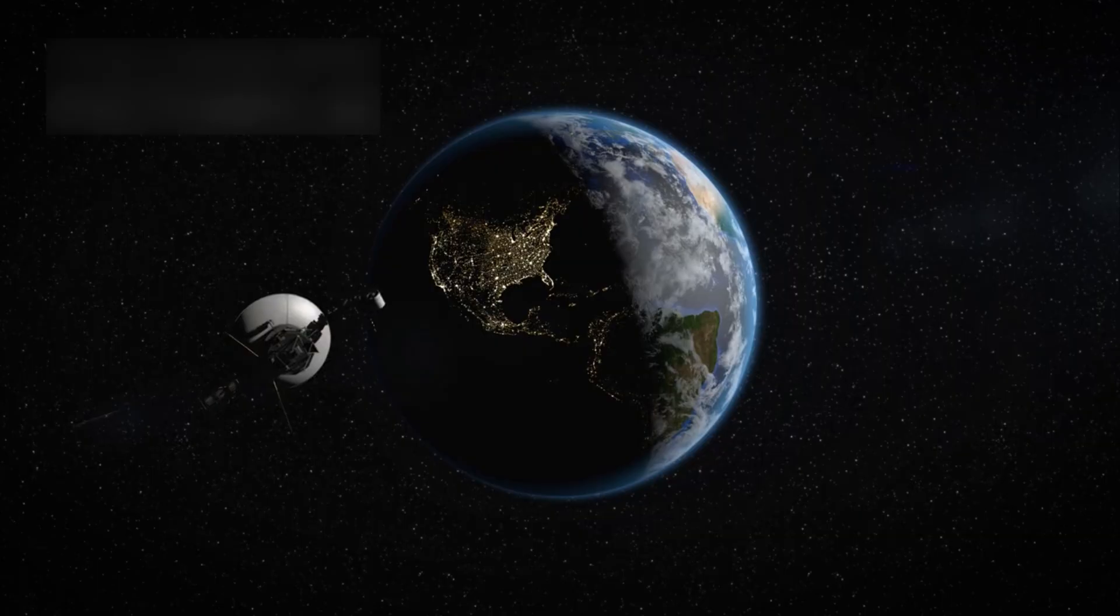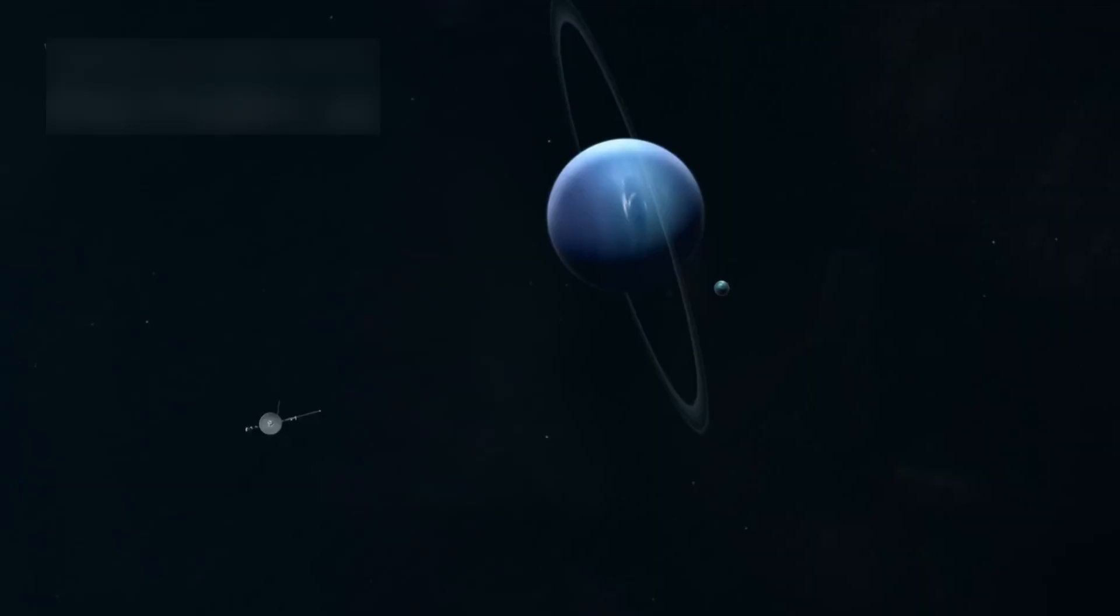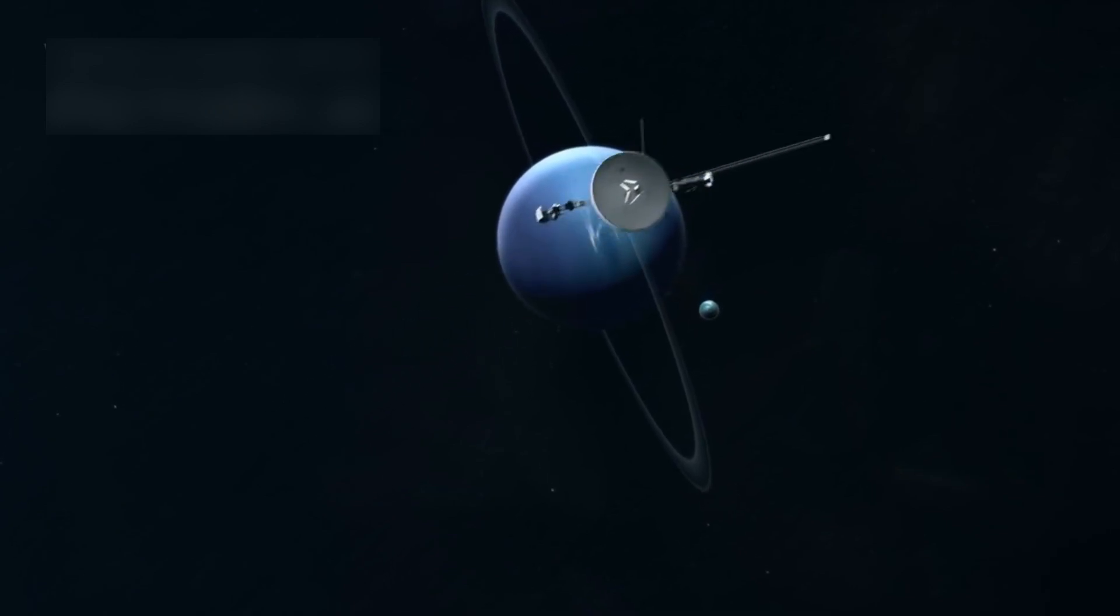Voyager 1, built with 1970s technology, went far beyond its original purpose. It became a pioneer, sending back stunning and detailed data of planets, their rings, and moons.